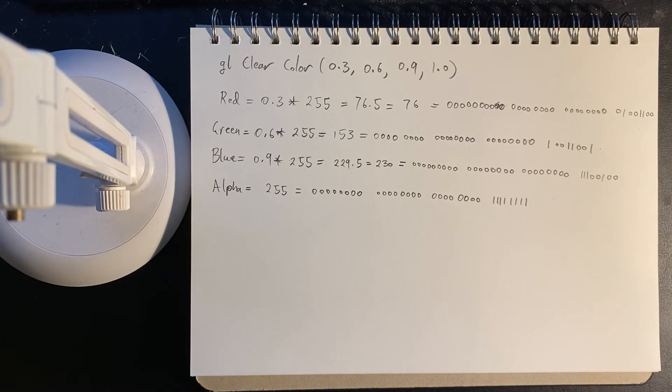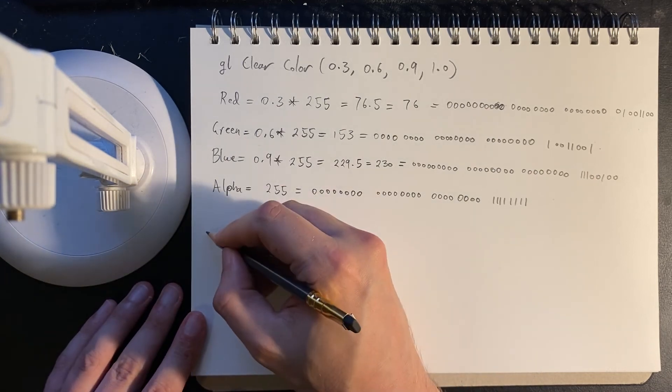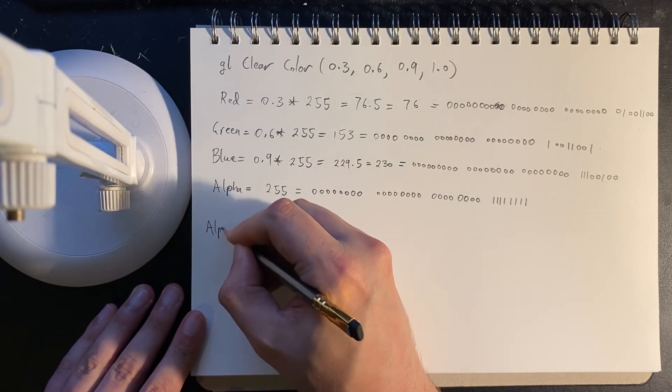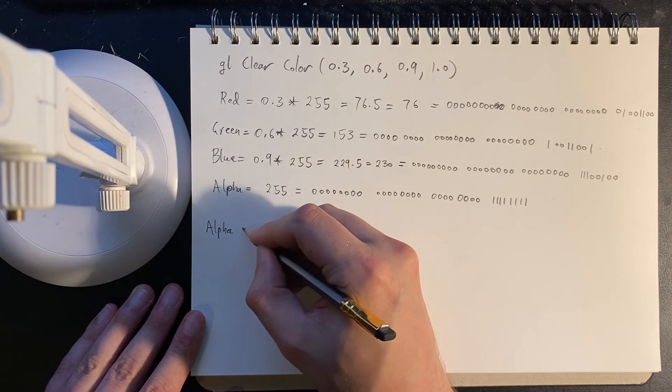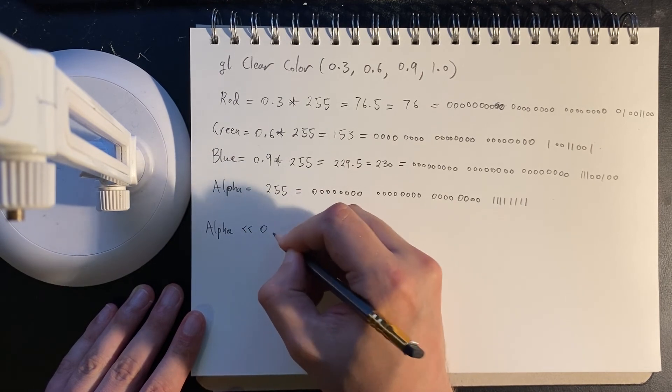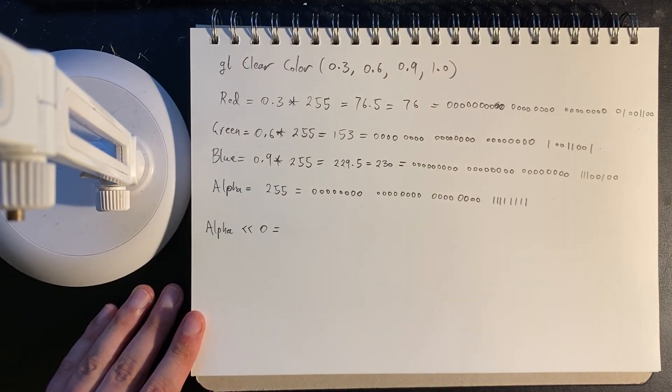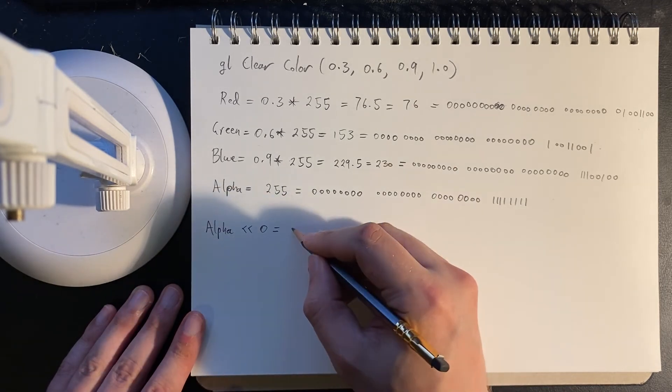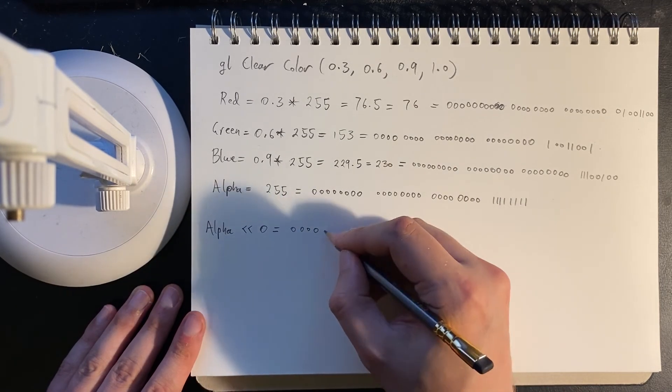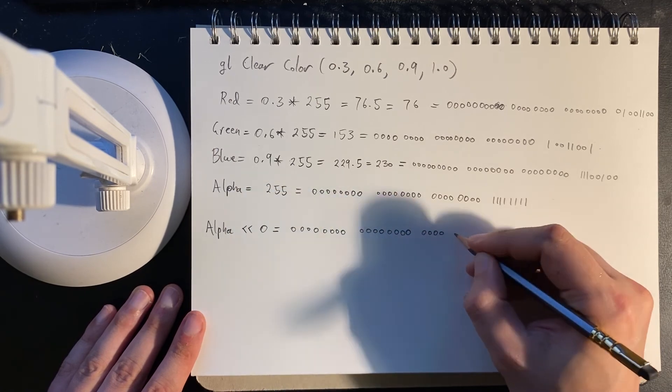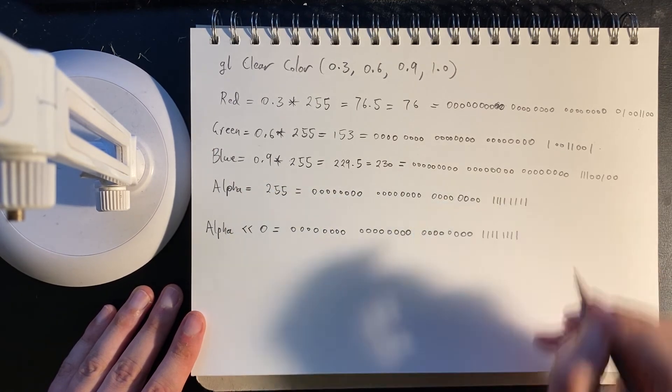Then the graphics card will perform bit shifts to get that information into the right position. So let's go from the reverse. It actually doesn't matter how we do this. We take the alpha and we need to apply no left bit shift. So bit shift it to the left by nothing. That just gives us the original.